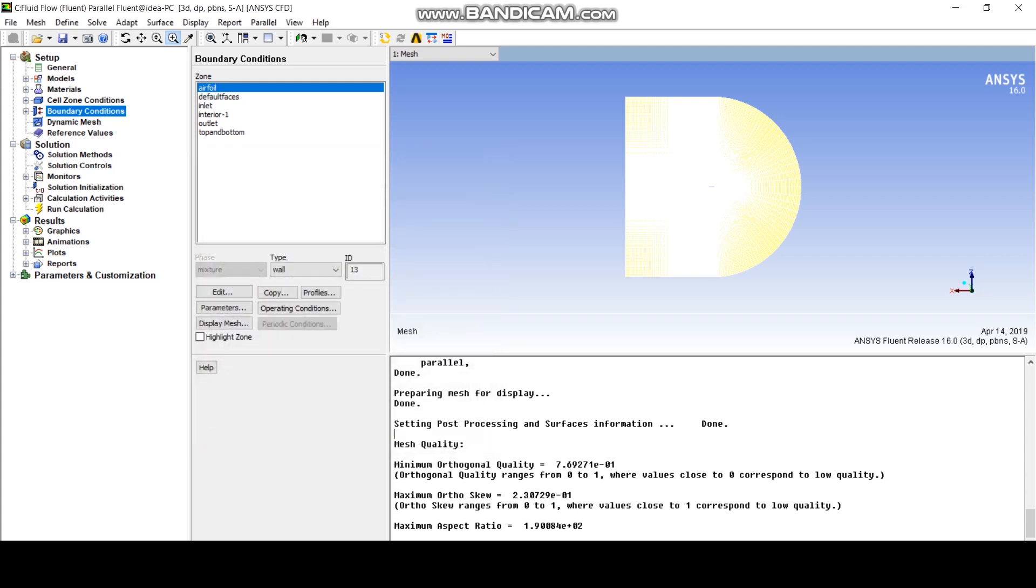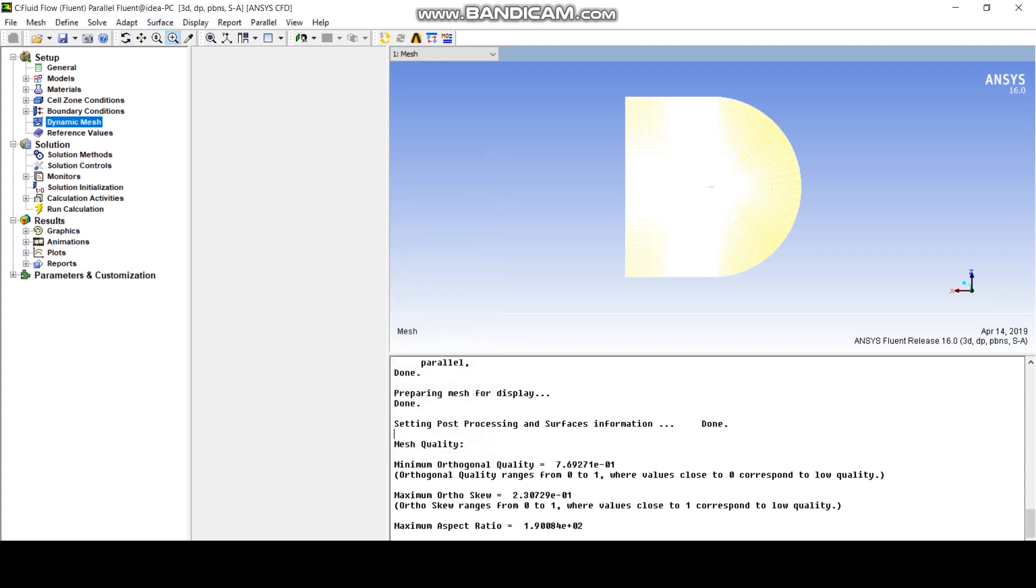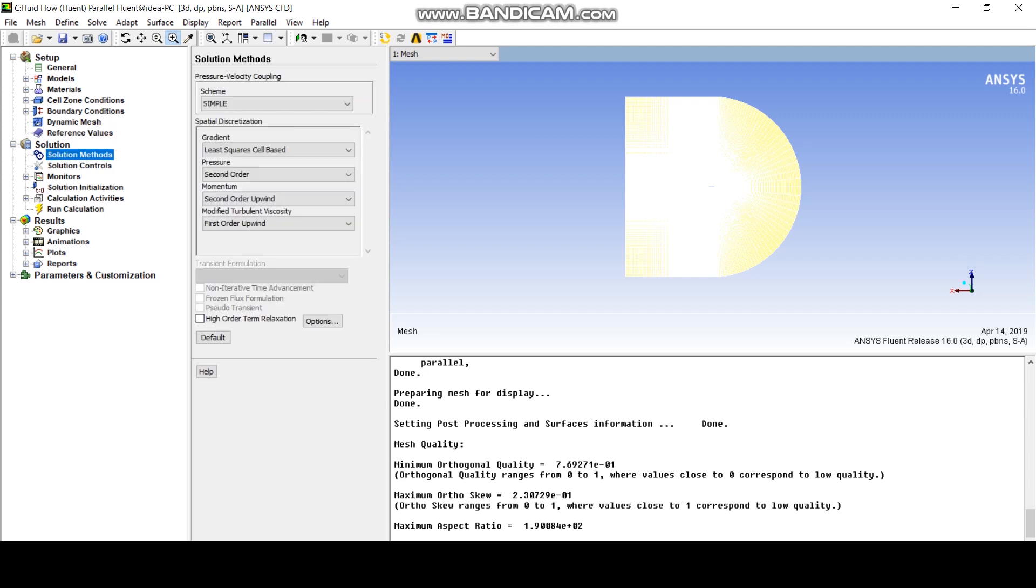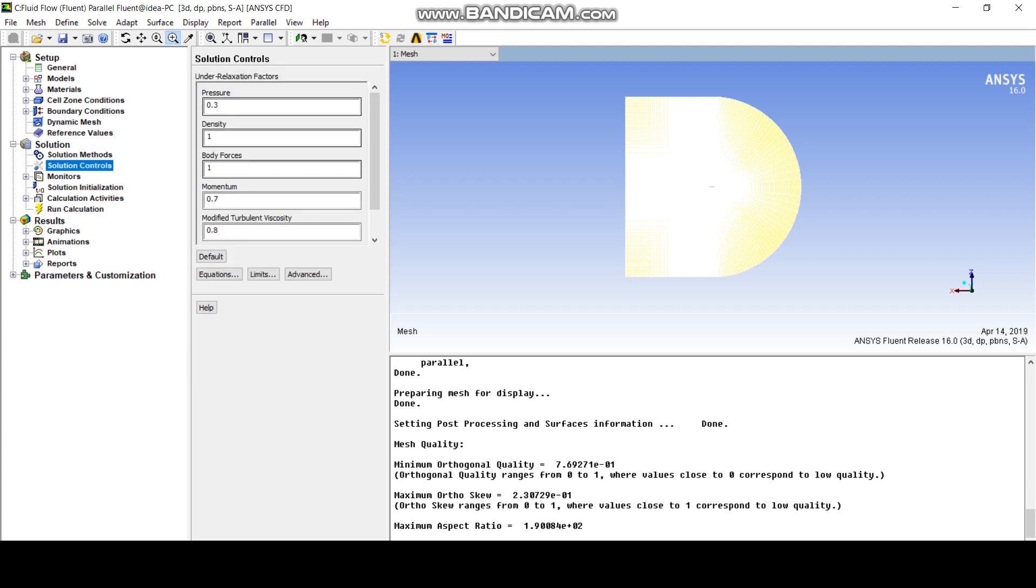After you set the boundary conditions, you can go to the solution methods. The solution methods determine the type of solution algorithm that you choose and also the spatial discretization. As Nikhil was alluding to earlier, you have first-order, second-order, even higher-order schemes. You can play around with these to check how they affect the convergence of your solution. The under-relaxation factors basically determine how your solution progresses from one iteration to the next. And having lower under-relaxation factor helps your solution converge better.